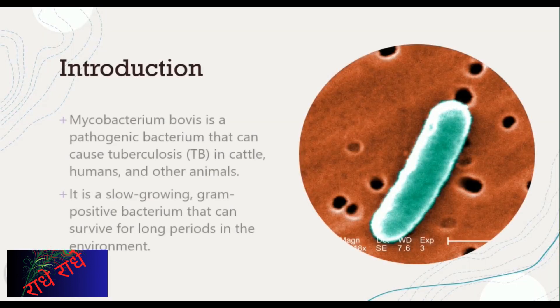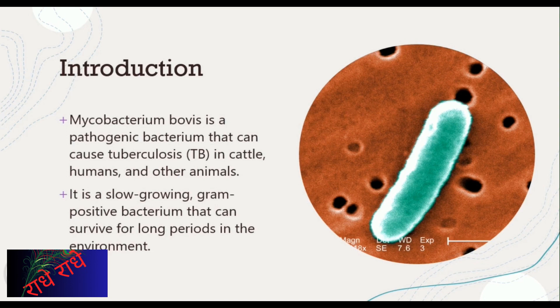M. bovis is a pathogenic bacteria that can cause tuberculosis in cattle, humans, and other animals. It is a gram-positive organism and capable of withstanding long-term environmental stress. Under a microscope, M. bovis appears as a single, free-floating organism with a distinctive morphology. It is considered to be a major contributor to human and animal TB cases in certain parts of the world.